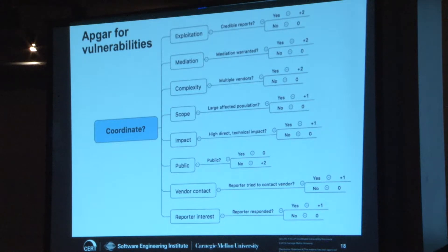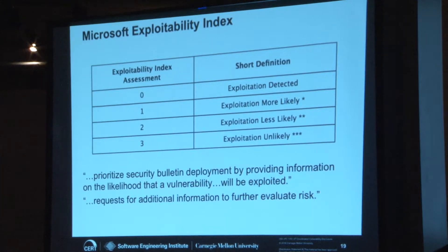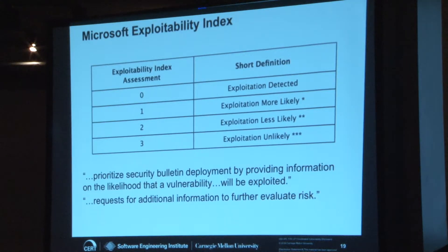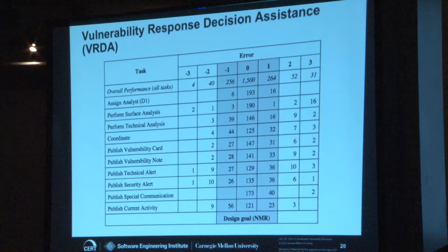The Microsoft Exploitability Index — they say this right on the page: they're providing additional information to help you evaluate your risk, and they're providing their guess as to the likelihood of being exploited. They're telling you threat probability for whatever bulletin just came out. It doesn't need to be super precise — they have four categories. One is 'yes, it's being exploited, it's proven,' and the rest sort of back off from there. That's the level of granularity you'd probably need to do anything useful.